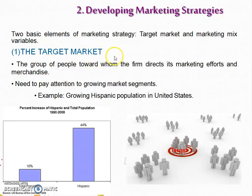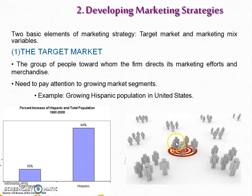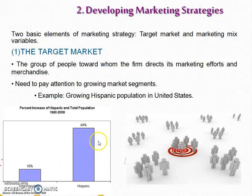While deciding about marketing strategies, the first and foremost area is about the target market — what target market to choose — because if the target market is rightly chosen, the profitability of the company will be good. For example, a chart shows that the Hispanic population in the United States is growing at 44 percent, so a company can choose this segment as their target because it is a growing, more profitable segment.